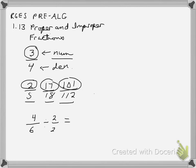So 4 divided by 2 is 2, and 6 divided by 2 is 3. This would be the reduced form of this original fraction. But nonetheless, this is proper because 4 is less than 6, and this also is proper because 2 is less than 3.